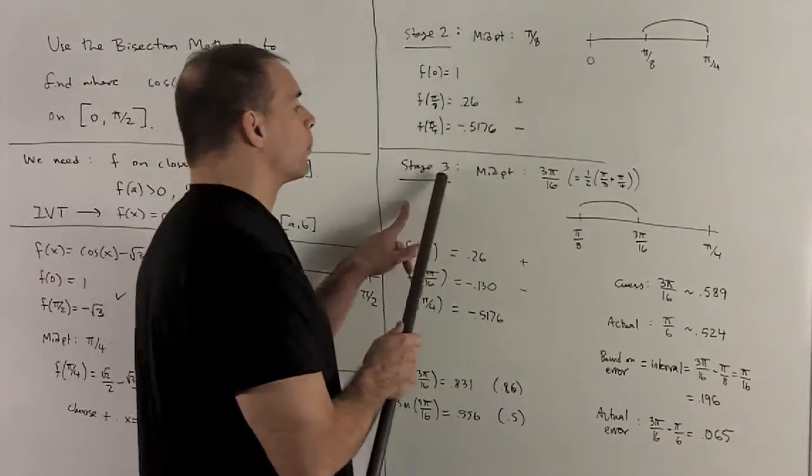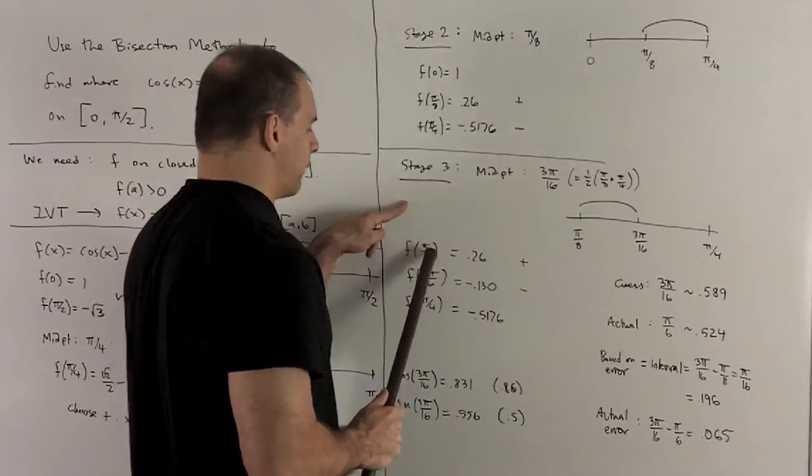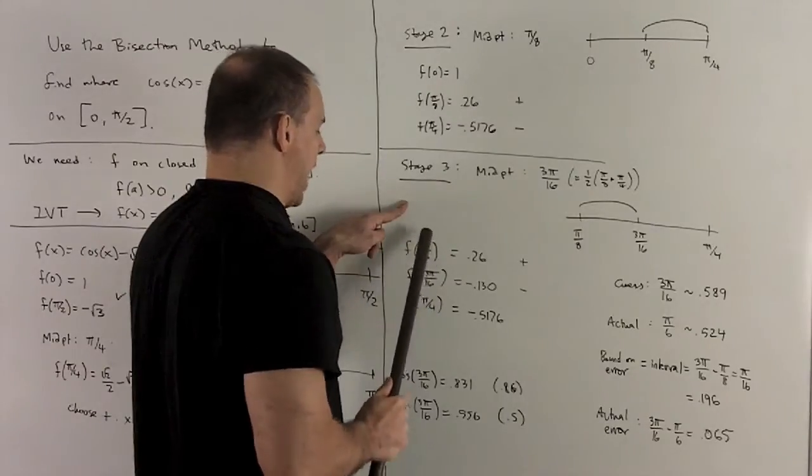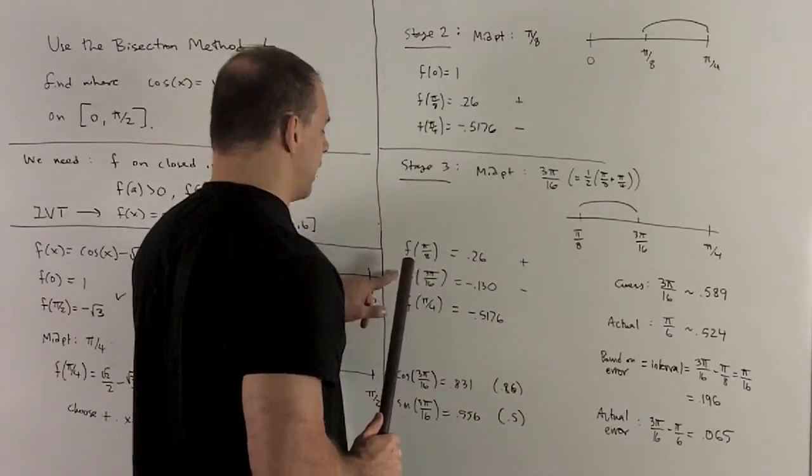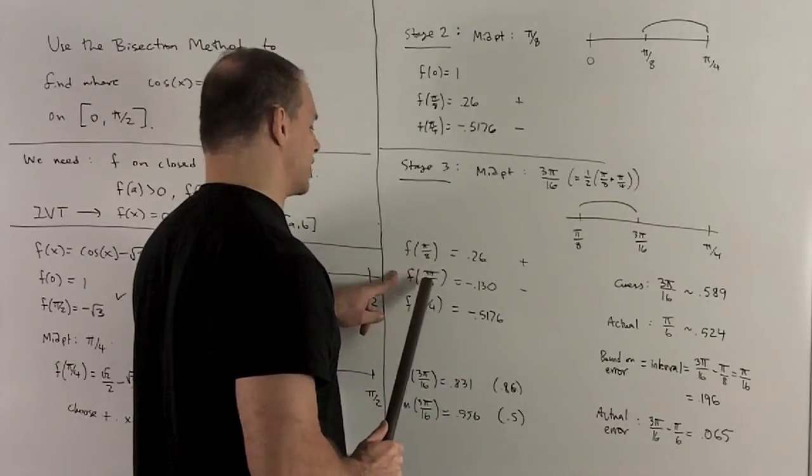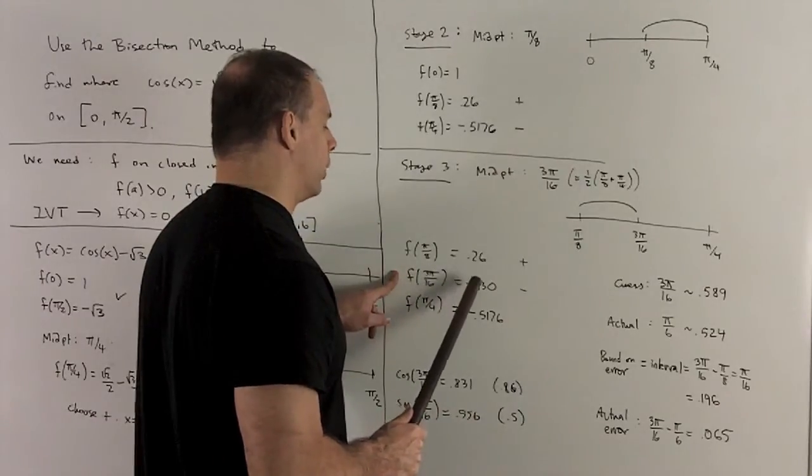Stage three, we're going to take the midpoint from here. So our points are π/8, π/4. Add those together and divide by 2. That gives me 3π/16. I evaluate the function at 3π/16. Calculator work. So I get -0.130.